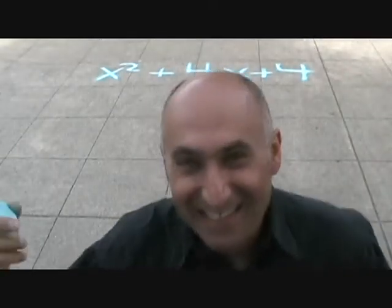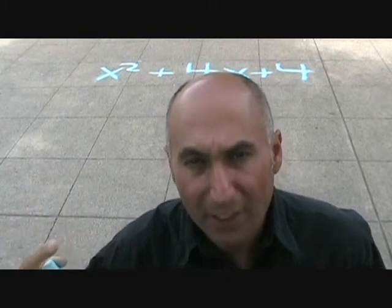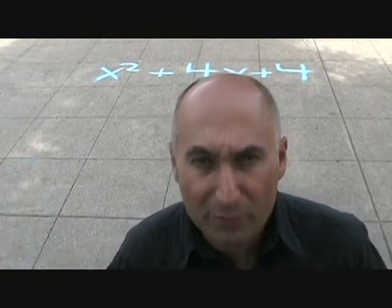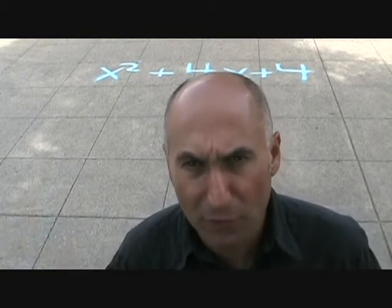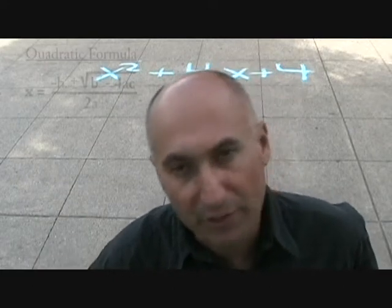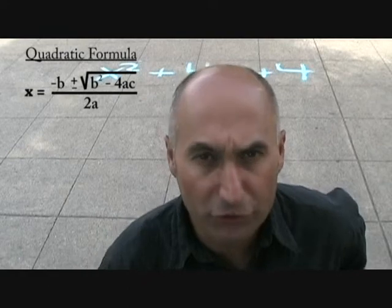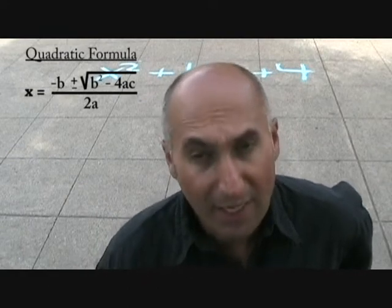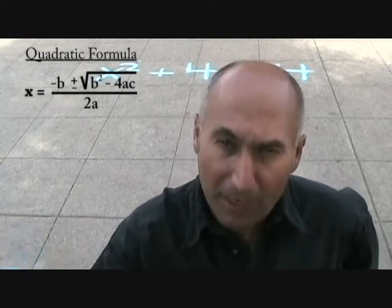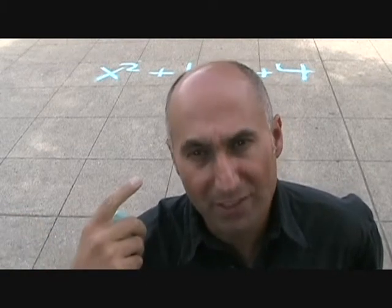The expression is x squared plus 4x plus 4. What we're going to do is take the coefficients and plug them into the quadratic formula. The quadratic formula is x equals negative b plus or minus the square root of b squared minus 4ac, all over 2a. You should have that written beside you on a piece of paper that you're always going to be referencing, or you're going to memorize it.